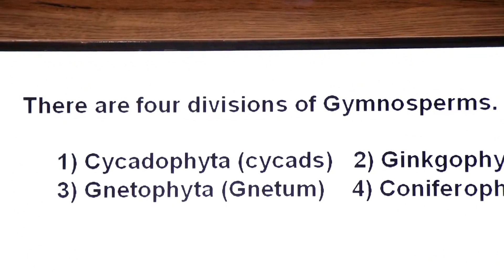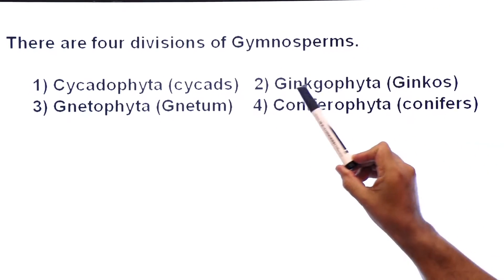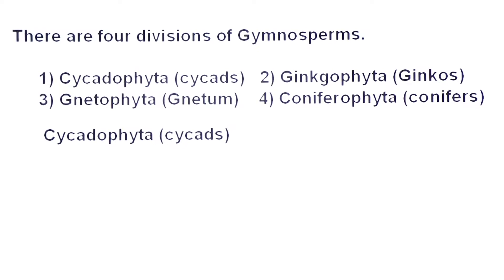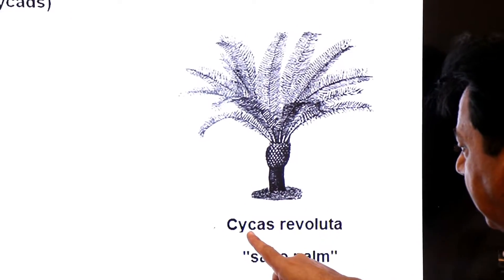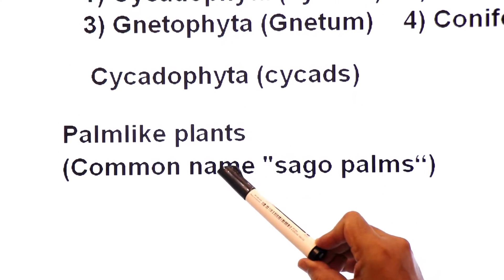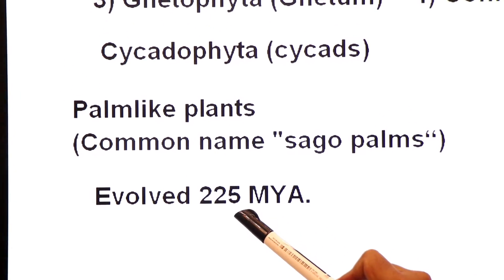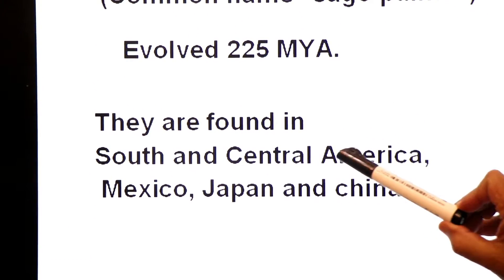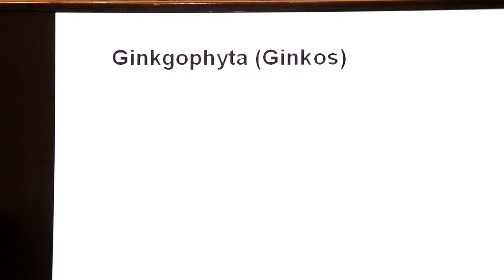Aab hum gymnosperm ki char divisions ko shortly discuss karte hain. There are four divisions of gymnosperms: Cycadophyta (including Cycas), Ginkgophyta (including Ginkgo), Gnetophyta (including Gnetum), and Coniferophyta (including conifers). Starting from Cycadophyta — Cycas: this is the sago palm tree, palm-like. Cycas revoluta — common name sago palm. They are palm-like, not true palms. They evolved about 225 million years ago and are found in South and Central America, Mexico, Japan, and China.